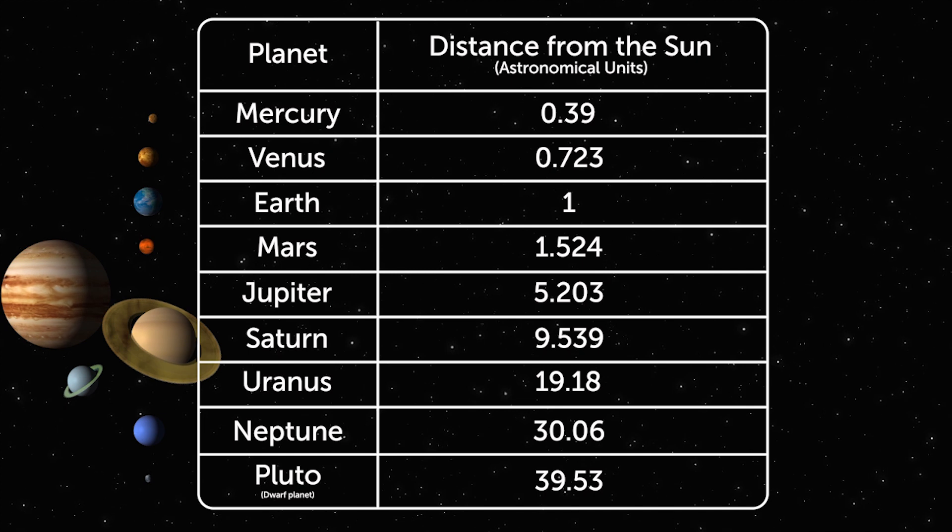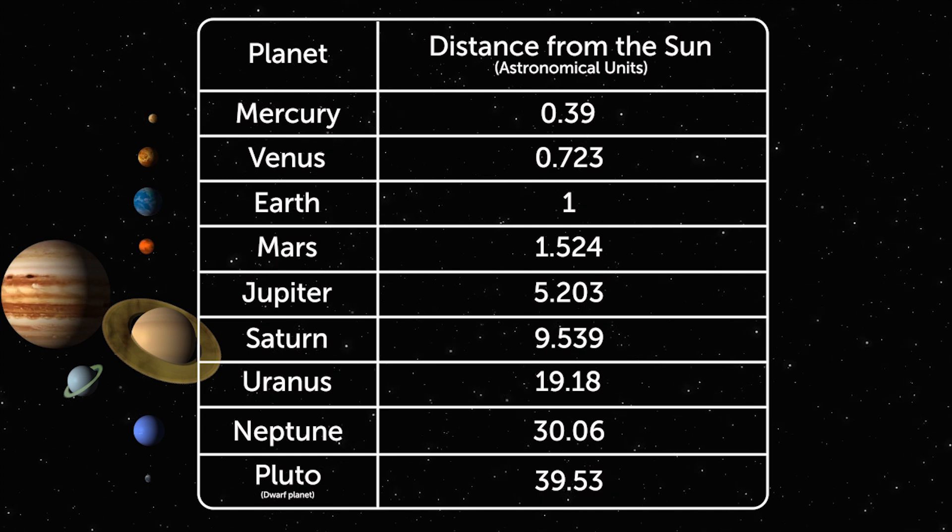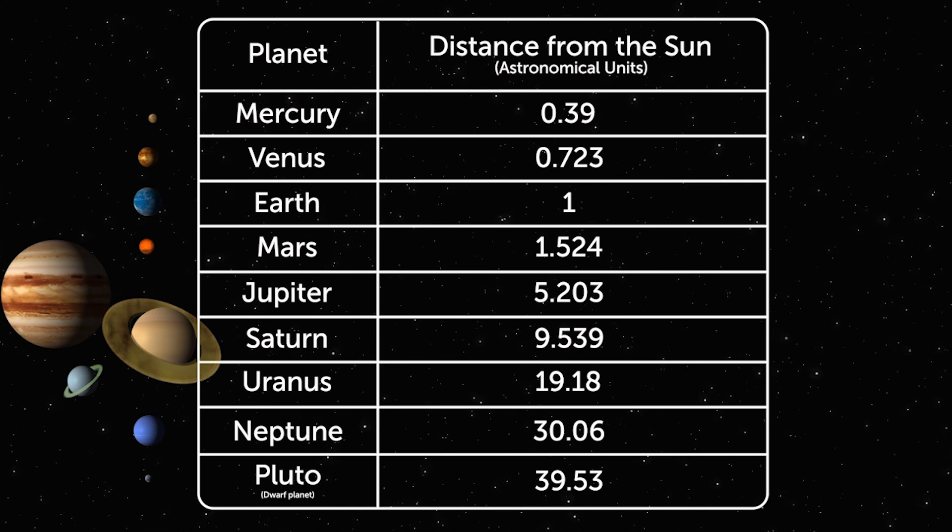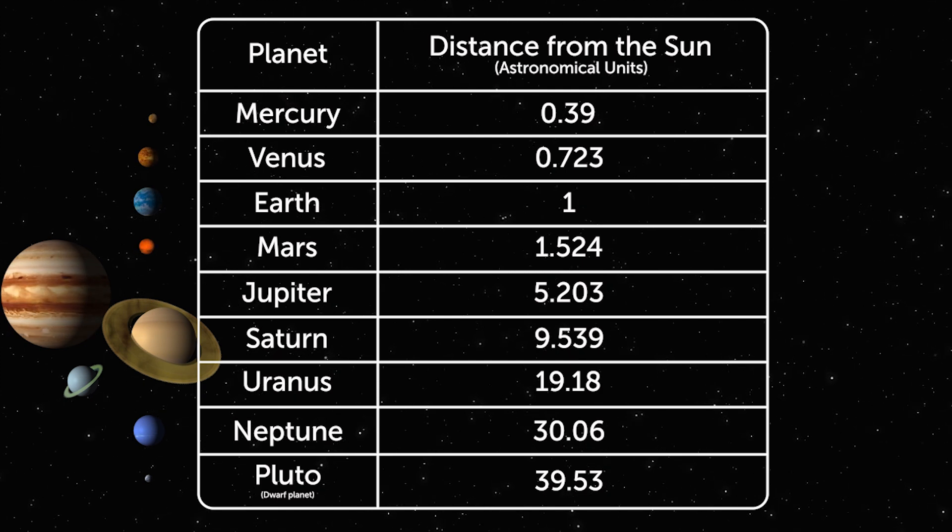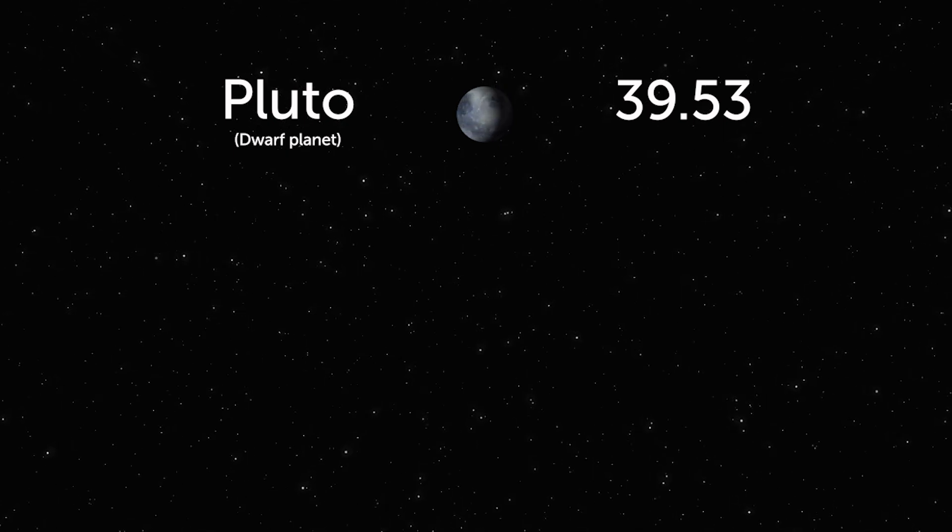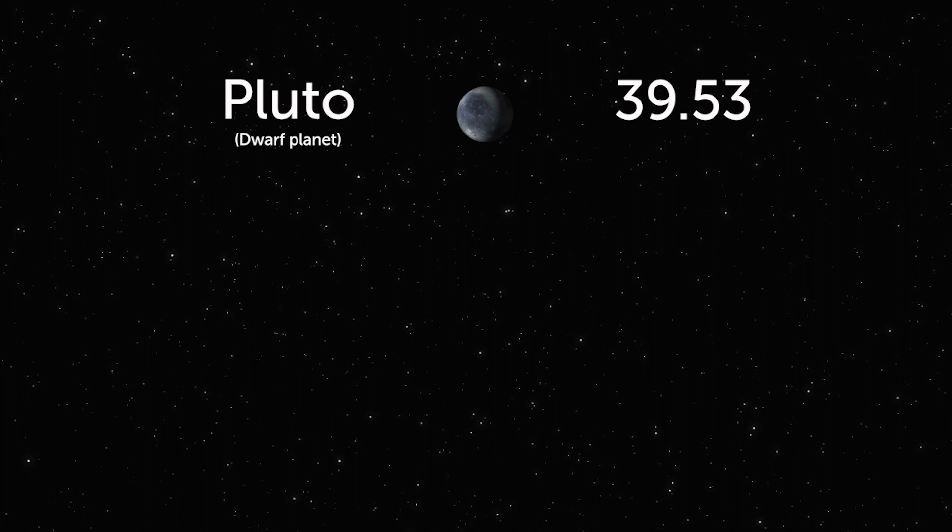What if scientists wanted to round the distances to the nearest whole astronomical unit? Look at the dwarf planet Pluto. At 39.53 AUs, it's further away from the Sun than all the other planets.